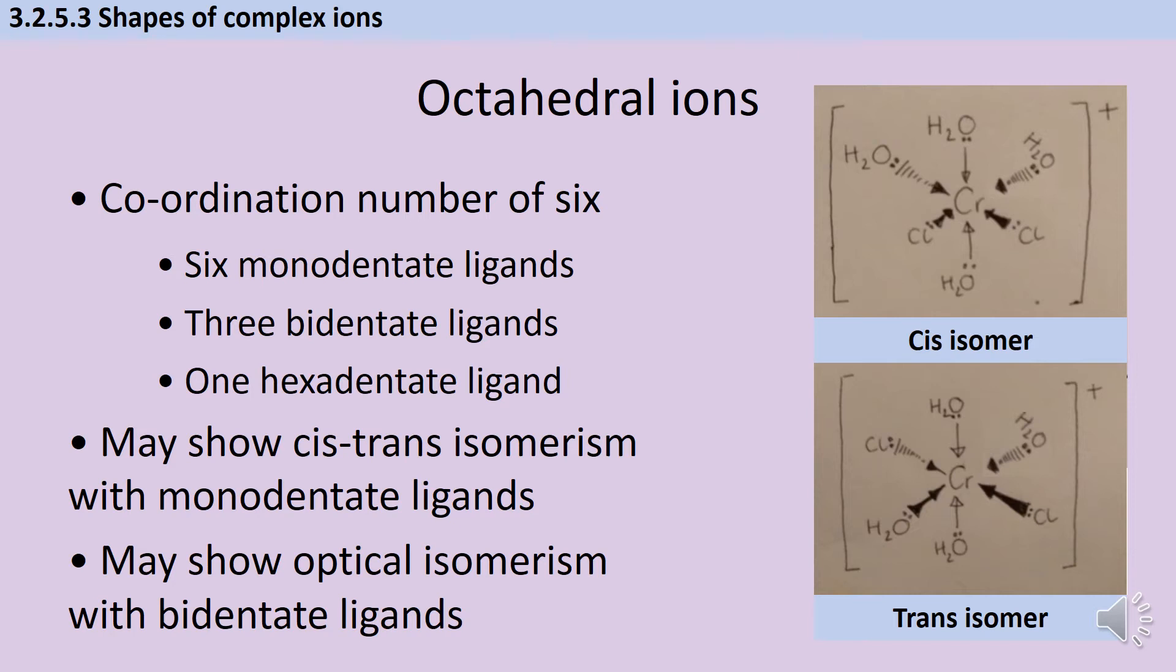So if you look at the two pictures over here on the right, in both instances we've got four water ligands and then two chloride ligands. And in the cis isomer, they're both on the same side of the chromium atom at the centre. And then if you look at the trans isomer, they're directly opposite one another.